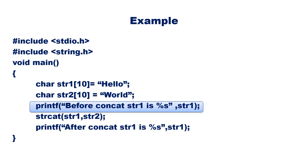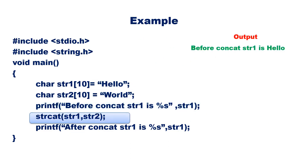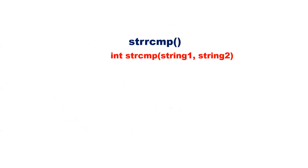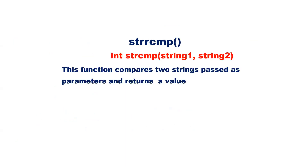Before concatenation, str1 is just "hello". Now let us perform the concatenation — strcat(str1, str2) — the content of str2 is added to the end of str1, so after concatenation str1 becomes "hello world".